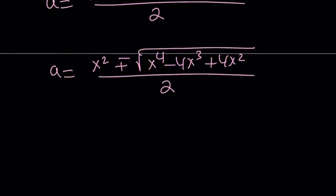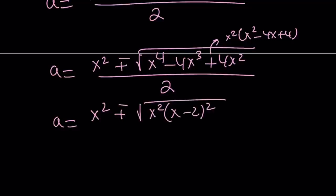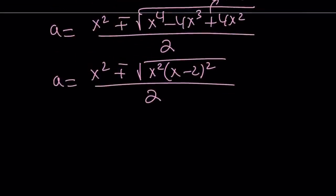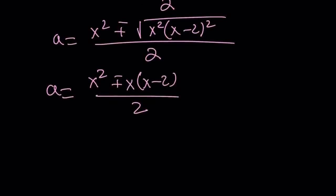And I definitely know this is an overkill but it's important. Now we can go ahead and take out an x squared. We get x squared minus 4x plus 4 which is x minus 2 quantity squared. So it gives us x squared times x minus 2 quantity squared. When I square root that with the absolute value but plus minus will take care of that, I get two solutions. x squared plus minus x times x minus 2 divided by 2.